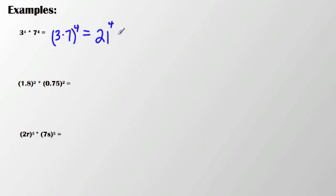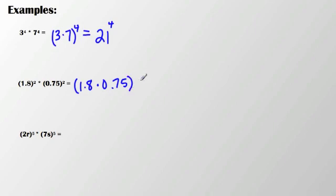Now, if I were asked to evaluate this, then I would go ahead and have to take that a step further and do 21 times 21 times 21 times 21, or 3 times 3 times 3 times 3 times 7 times 7 times 7 times 7, which might be a little easier. Over here now, I have 1.8 squared times 0.75. So I'm going to put that value in parentheses and then square it. 1.8 times 0.75 is 1.35, and then that value is squared.